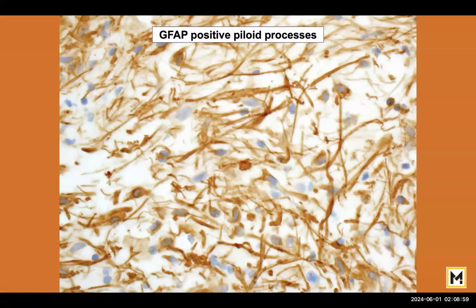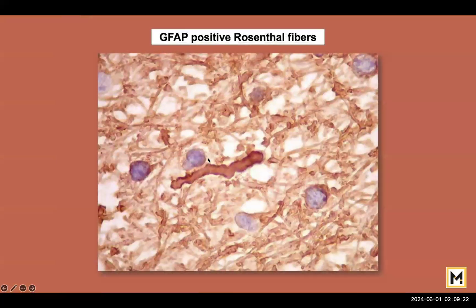If you do an IHC it's going to be very strongly positive for what is called GFAP, or the glial fibrillary astrocytic protein. Because it's a fibrillary astrocytic protein, all the fibrillary cell portions of the tumor will stain positive very strongly, as you can see in this image. The Rosenthal fibers are also GFAP positive, which is something very interesting.